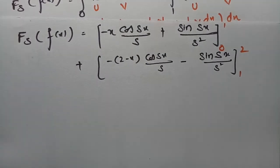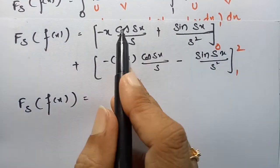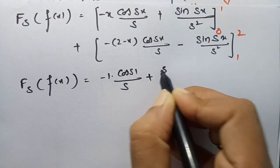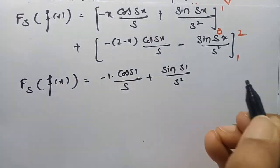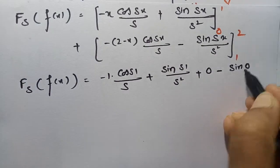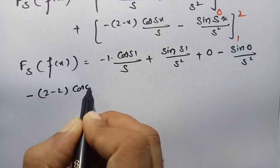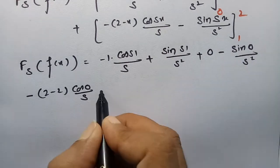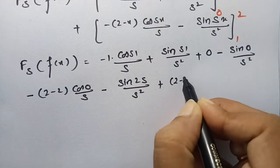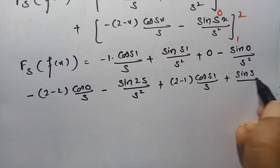Substituting upper and lower limits: for the first integral at x=1 we get minus cos(s)/s plus sin(s)/s squared, and at x=0 the sine term is 0. For the second integral at x=2 we get minus (2 minus 2) cos(2s)/s minus sin(2s)/s squared, and at x=1 we get plus (2 minus 1) cos(s)/s plus sin(s)/s squared.